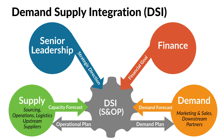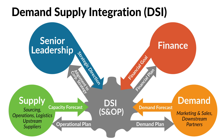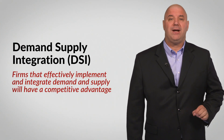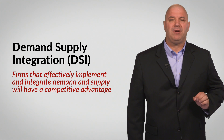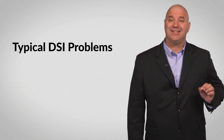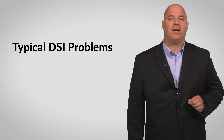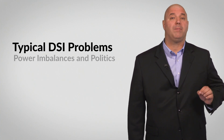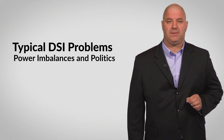Beyond having balanced demand and supply plans, the sales and operations planning meeting produces a financial plan that's aligned with corporate strategy. Consensus is gained through this process, and everyone should be marching to the beat of the same drum. Firms that effectively implement and integrate supply and demand will have a competitive advantage. However, integrating demand and supply is not very easy.